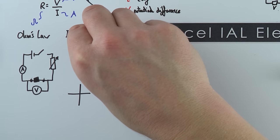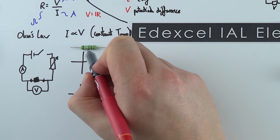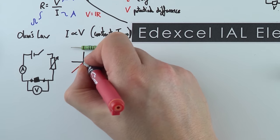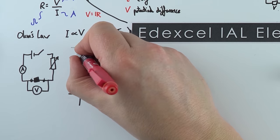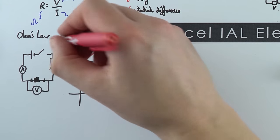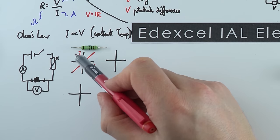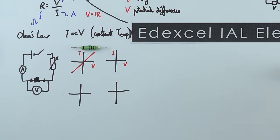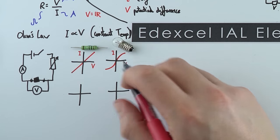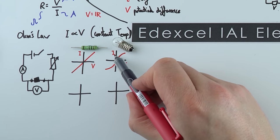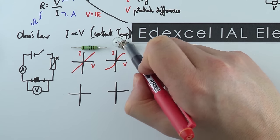There are four main I-V graphs. First, for a resistor or ohmic conductor: it has constant resistance, giving a straight line through the origin. This applies where Ohm's law holds — current I is proportional to V at constant temperature. Second, for a filament lamp: we get a curve that gets steeper at the origin then flattens out, because at higher currents there is greater heating of the metal wire, increasing resistance.